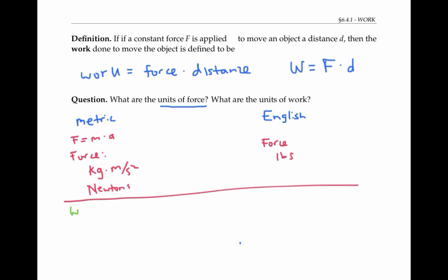Now, the units of work, since work is force times distance, and distance in metric units is in meters, that gives units for work of kilograms meters squared per second squared. Or we can write your work as Newton meters. And this collection of units is also given its own name, which is the joule.